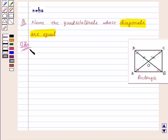So the quadrilaterals whose diagonals are equal are: First one is a rectangle.